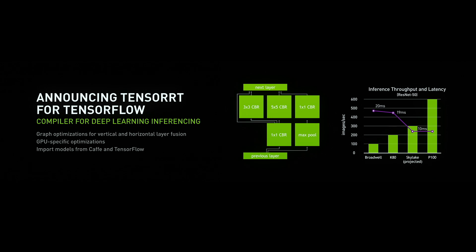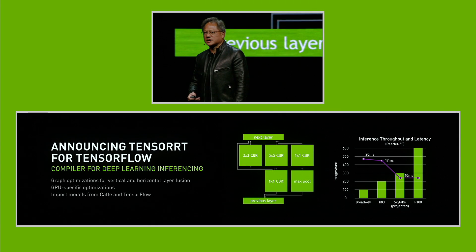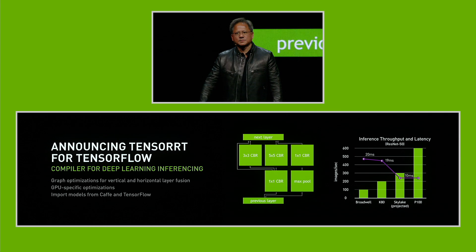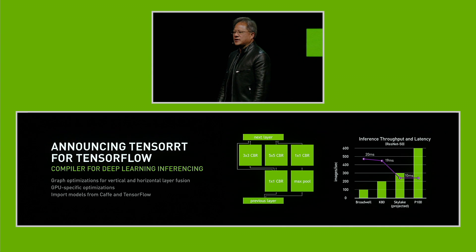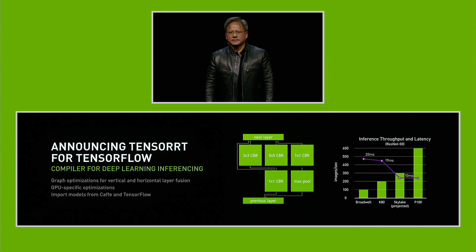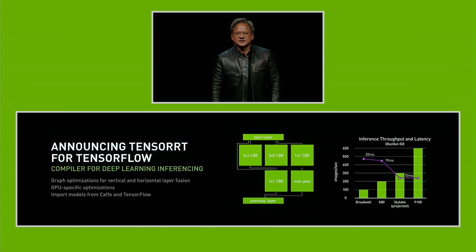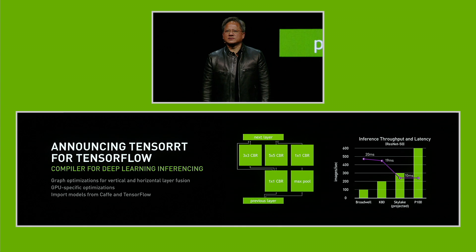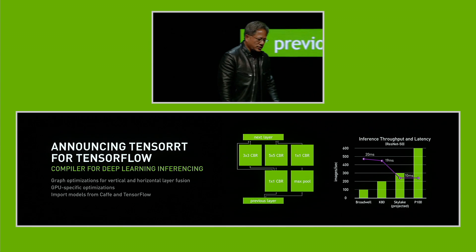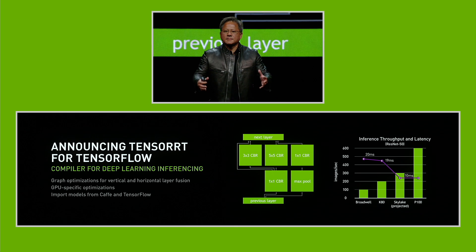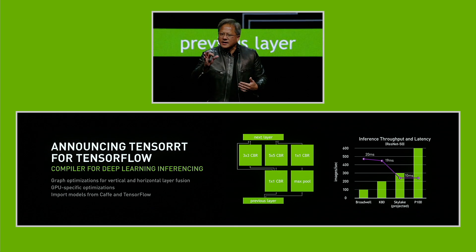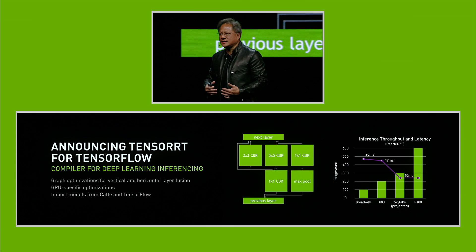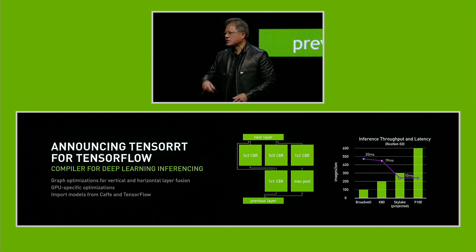This is the inferencing performance. Broadwell is the fastest CPU of today. Skylake is the next generation CPU — we haven't had a chance to benchmark it yet, so we're giving it the full credit of what's possible. K80 is the GPU we announced five years ago. The y-axis is images per second — how quickly it can do inferences in one second. P100 is able to do 600 images per second. Not only is the throughput important, but also the latency — how long it took you to do it, not how many you can do.